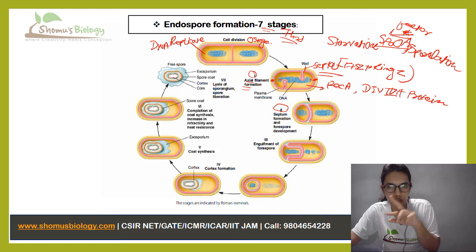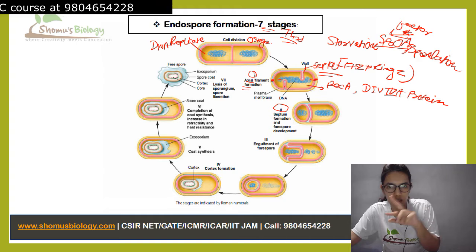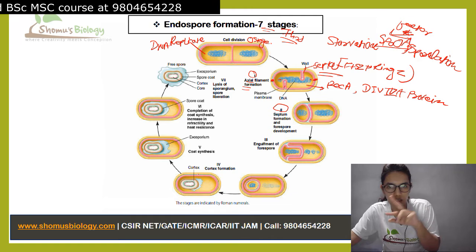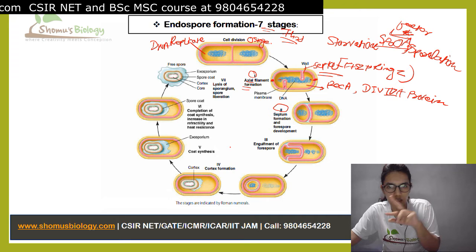At the start of the fourth stage, the mother cell is starting to disappear. There are morphological changes: the DNA properly circulates and the remaining mother cell DNA disappears. In the later part of the fourth stage, cortex formation has occurred, and cortex formation means heat resistance.